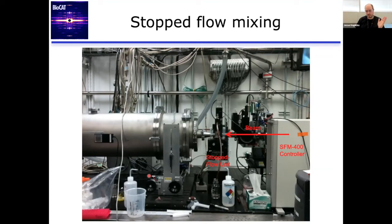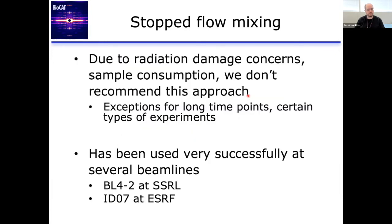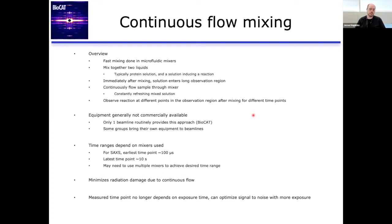Here's an example of a stopped flow experiment done at our beamline 12 years ago, looking at ribozyme refolding. We measured the equilibrium endpoints — the unfolded and folded states — and then using a stopped flow mixer, measured intermediate states and got a time series watching refolding occur. You can watch these changes in time through the SAXS curve and interpret what your sample is doing in solution. We don't typically recommend stopped flow at our beamline due to radiation damage and sample consumption, but it is widely used at several other beamlines.